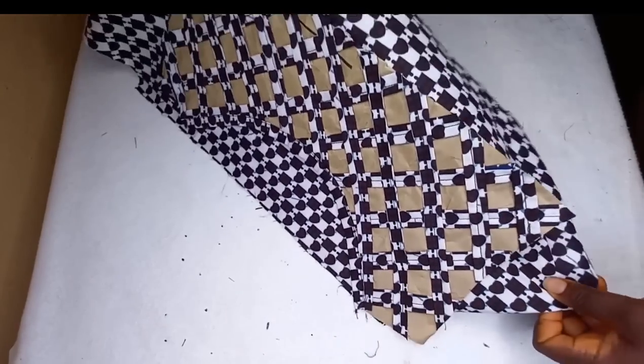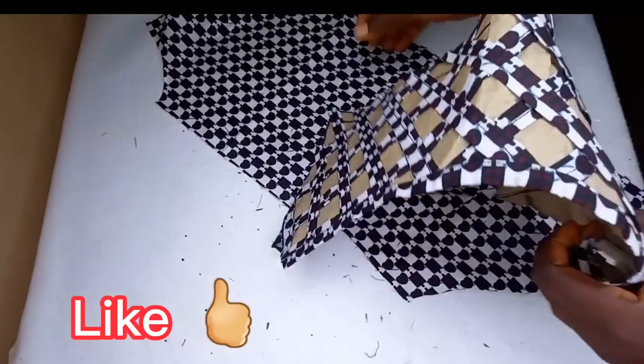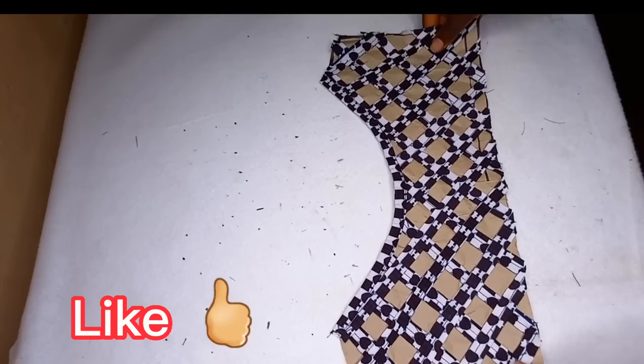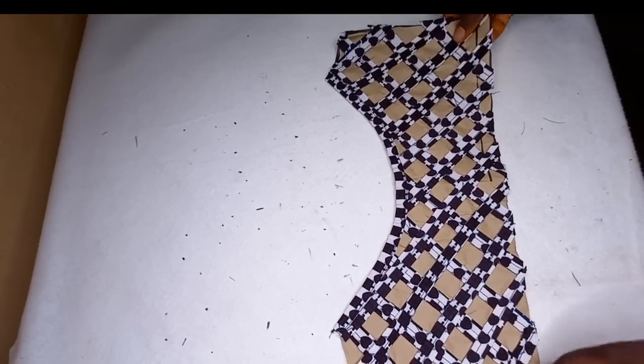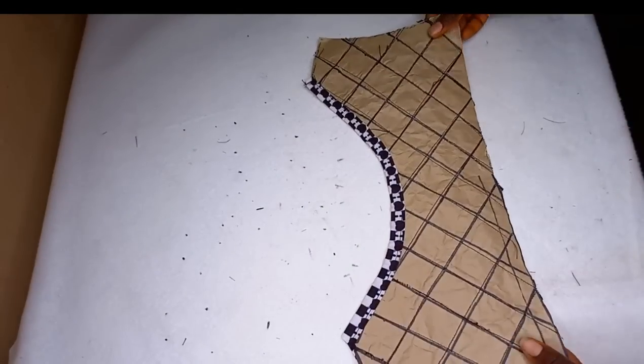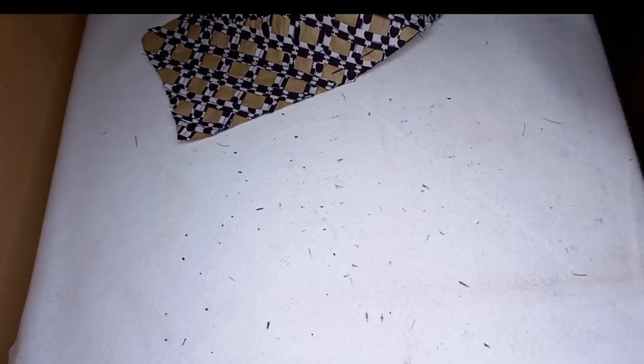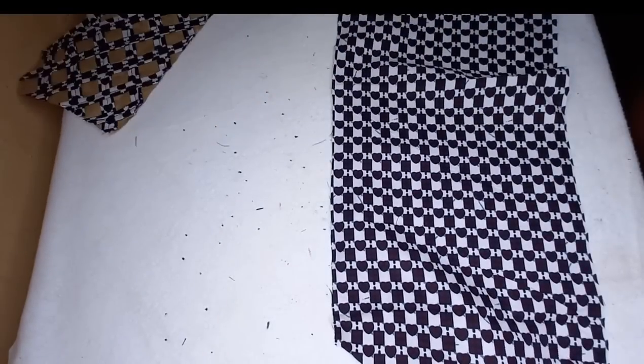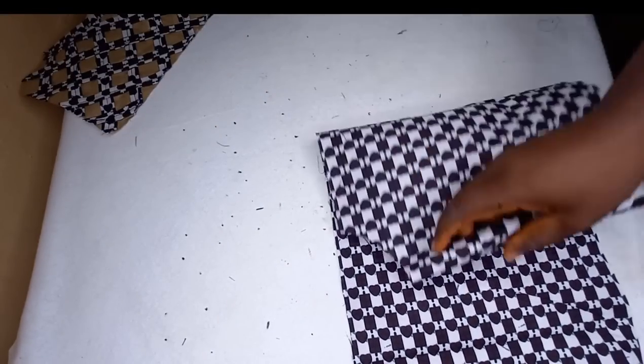So guys I'm done sewing it up and I'll be attaching it to the remaining fabric. This is the front of it, this is the look we have and this is the back. At the neckline you are going to bind it, you are going to use your fabric to create a bias and bind it up just like you saw on mine.